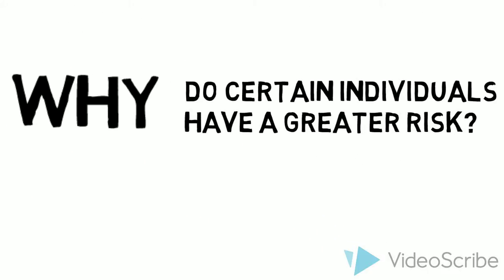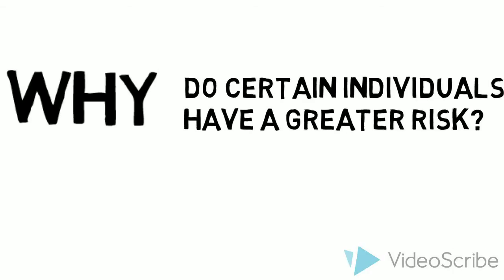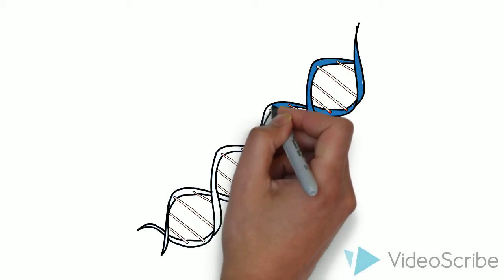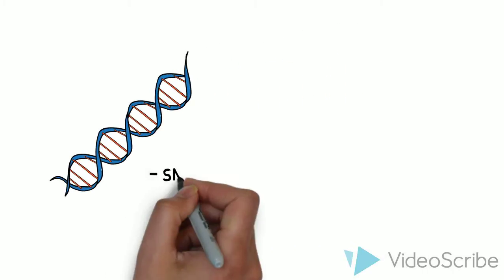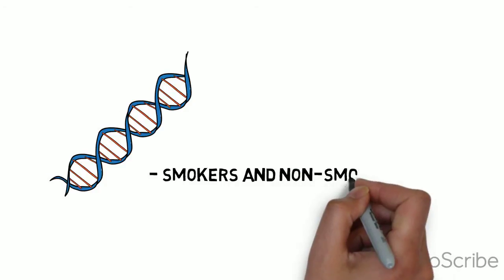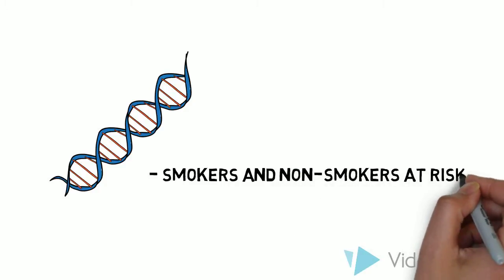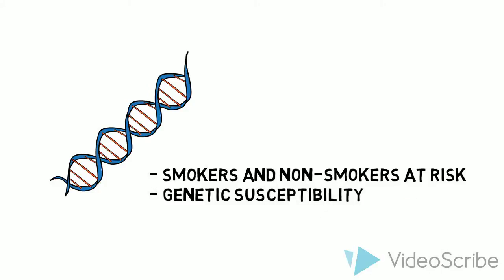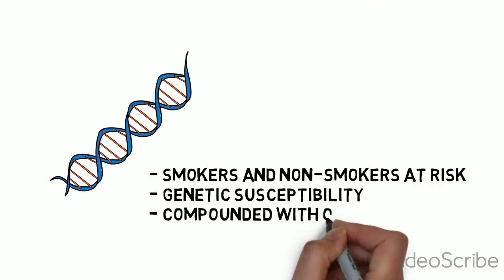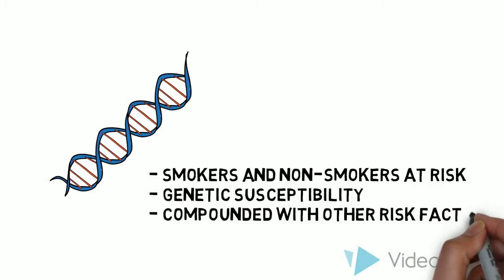Why do some individuals have a greater risk of developing lung cancer? Genetic predisposition is a major contributing factor. Both smokers and non-smokers have the possibility of having genetic susceptibility, and each group has specific genes which predispose them to greater risk. Genetic susceptibility is then compounded with direct risk factors such as environmental or occupational exposures, leading to a very specific population with greater risk.